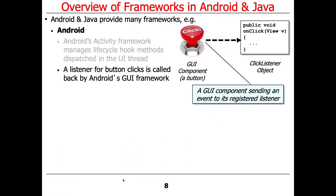Another good example of a framework is the GUI framework that waits for button clicks and then has listeners dispatched to handle whatever the click is supposed to do. You have a hook method called onClick that you fill in, and you don't have to write all the code to sense the click, run it through the window manager, or handle the demultiplexing and dispatching to the right click listener.